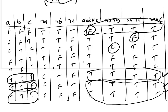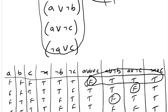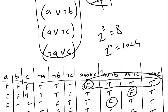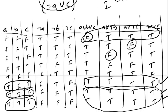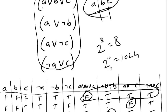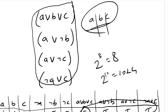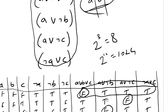This brute-force truth table approach is only practical when the number of variables is small. For three variables we check 2³ = 8 assignments, but for ten variables it is 2¹⁰ = 1024, and for twenty-two variables it goes into the millions. This becomes completely impractical for large variable counts, so we need to use the DPLL algorithm instead.